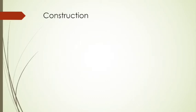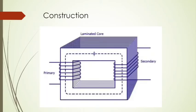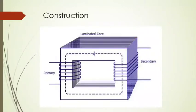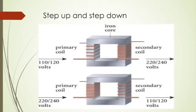The construction of the transformer: the transformer consists of a rectangular core of soft iron in the form of laminae insulated from one another. If the number of coils in the primary is less than that of the secondary, it is called a step-up transformer. If the number of coils in the primary is greater than the secondary, it is called a step-down transformer.